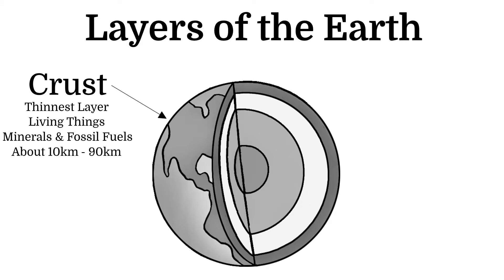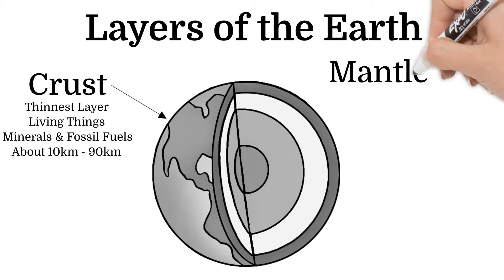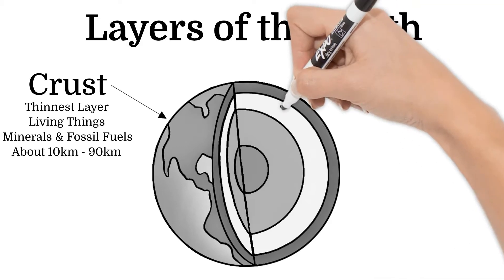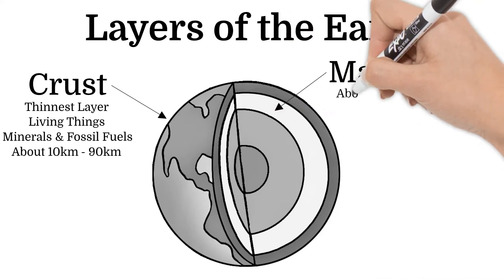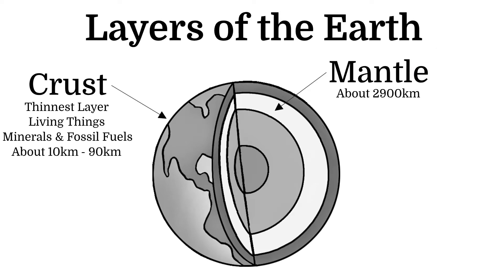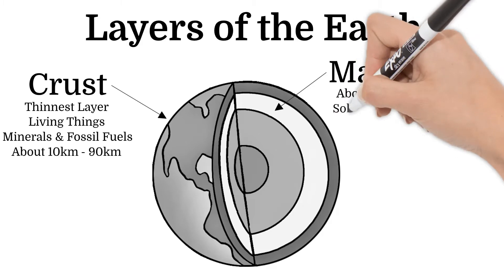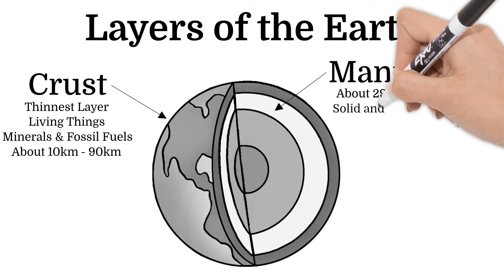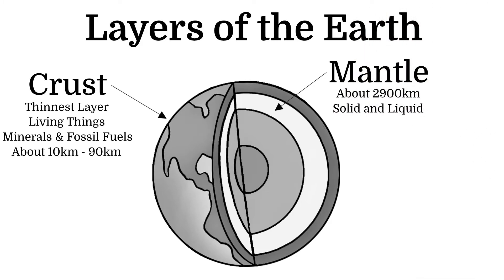The mantle is the next layer down and it's about 2,900 kilometers thick. Close to the crust the mantle is solid, but it becomes liquid the further inside the earth you go.